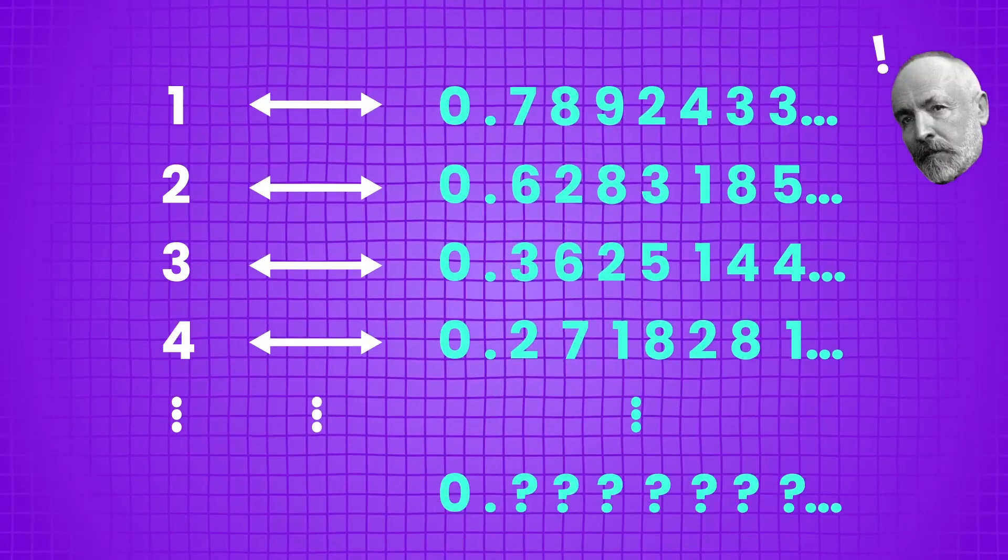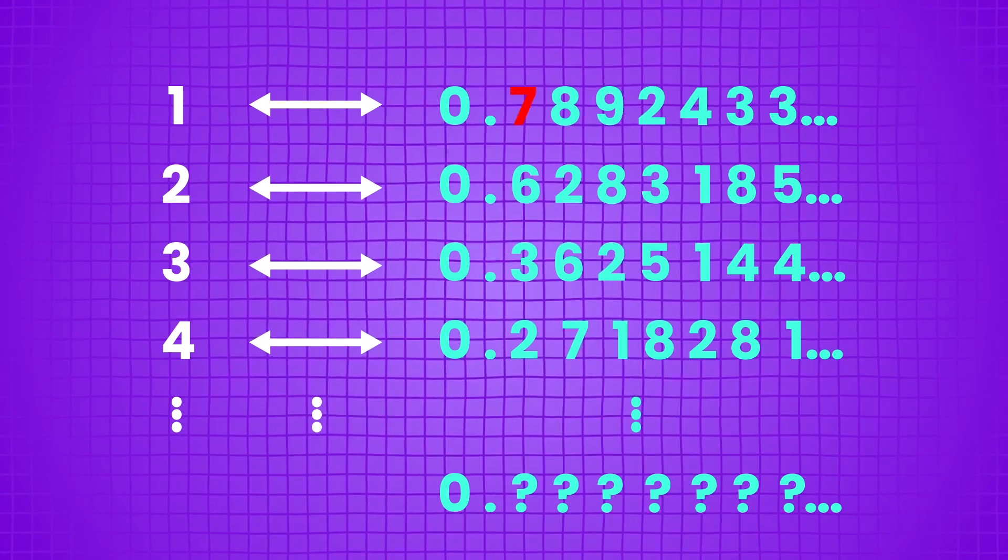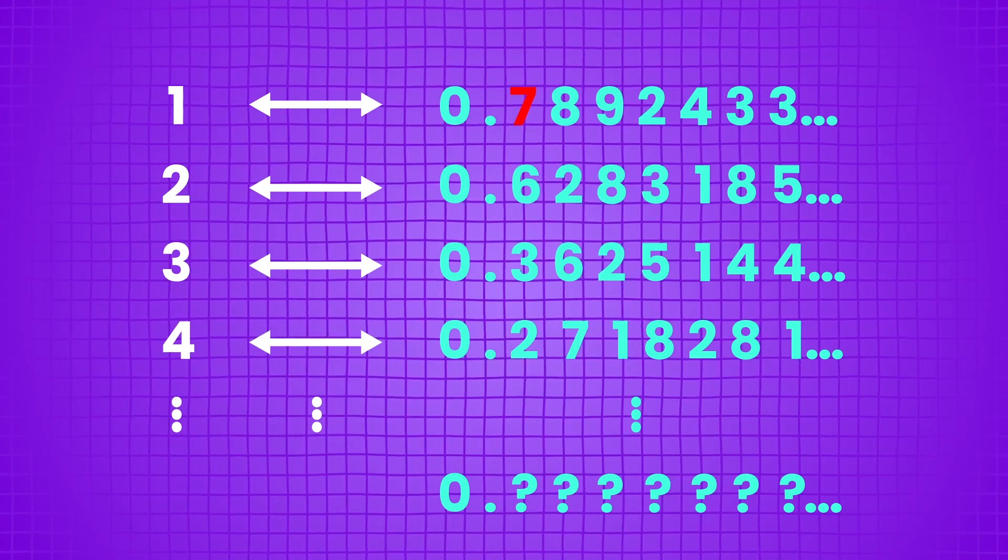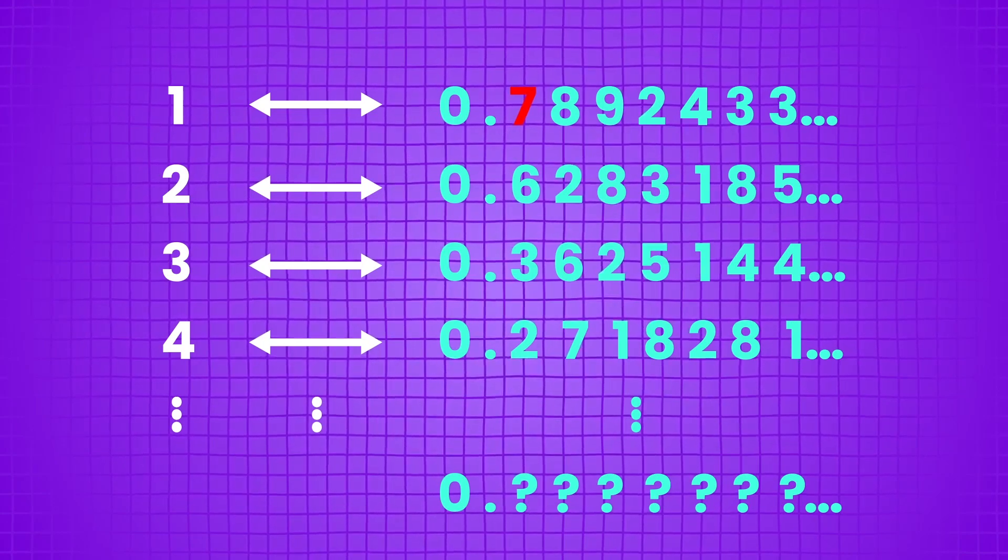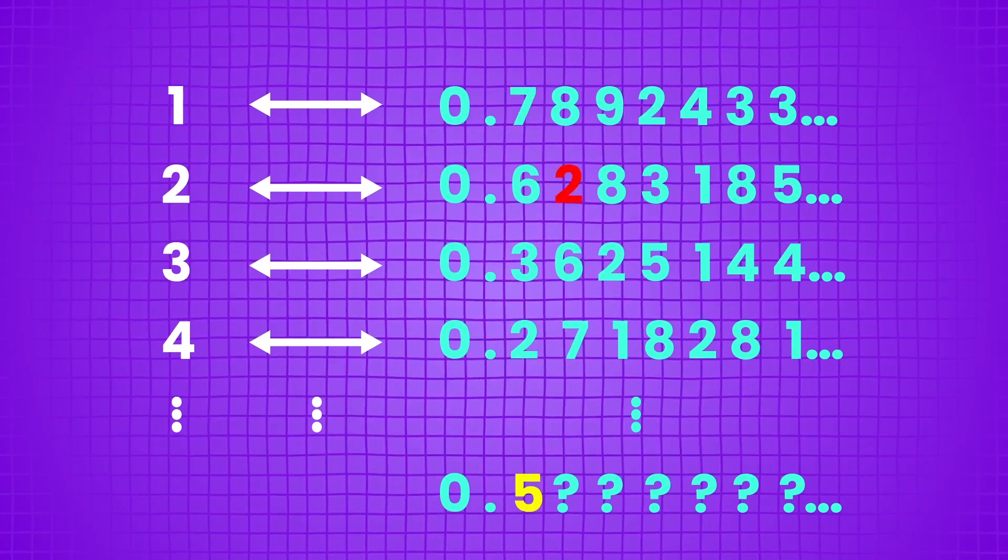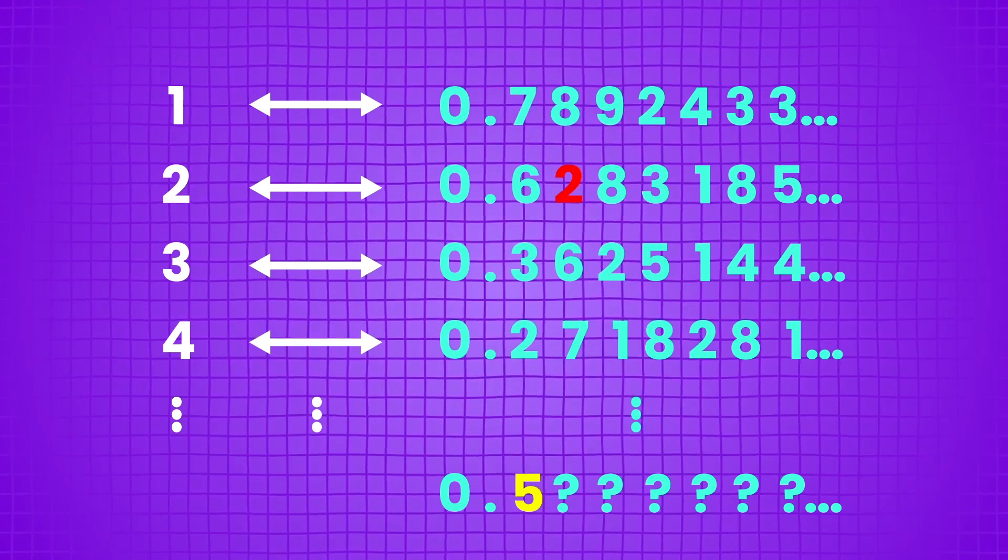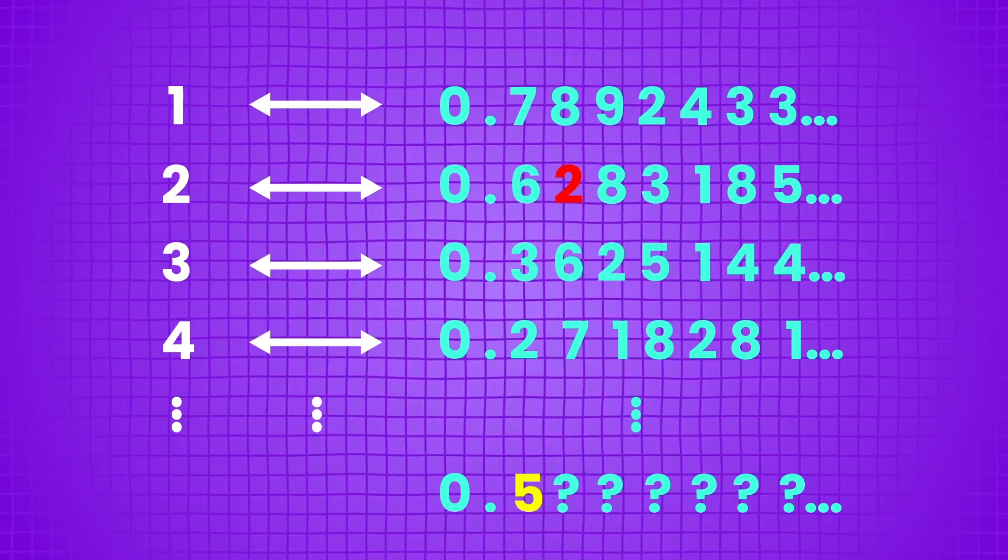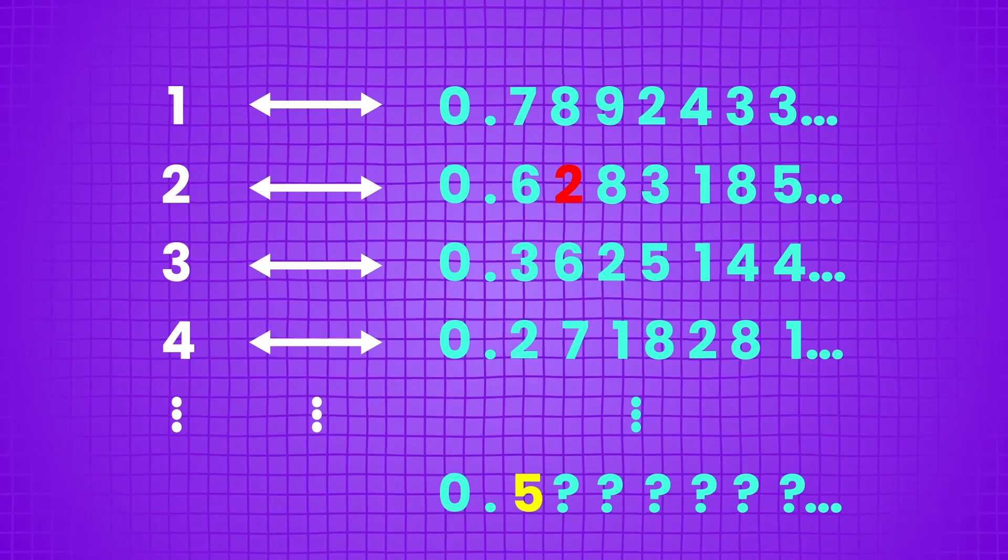Yet Cantor noticed that you could always create a new decimal guaranteed not to be on your complete list. Take the first digit of the first decimal on your list, 7, and make the new decimal's first digit anything but 7, say 5. Then look at the second digit of the second decimal in your list, 2, and make the new decimal's second digit anything but 2, say 8.